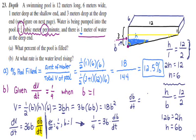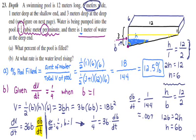Dividing both sides by 36 gives dB/dt equals 1 over 144. As a decimal that's approximately 0.00694. The label for this answer is meters per minute — it's a linear measurement (depth), not area or volume, so no square or cubic is attached. This is the correct answer for Part B.